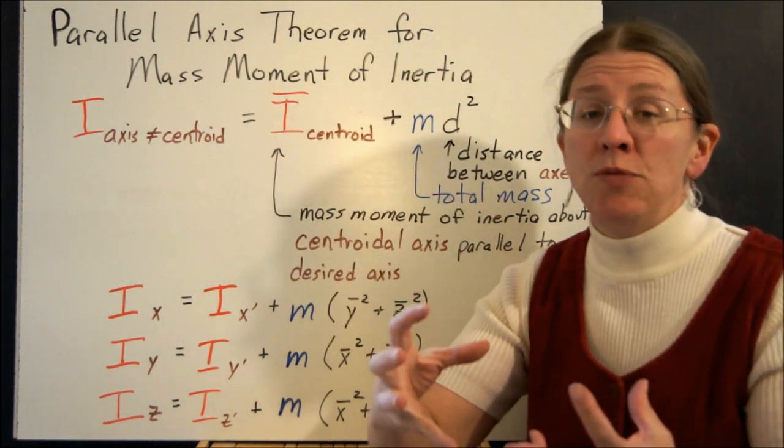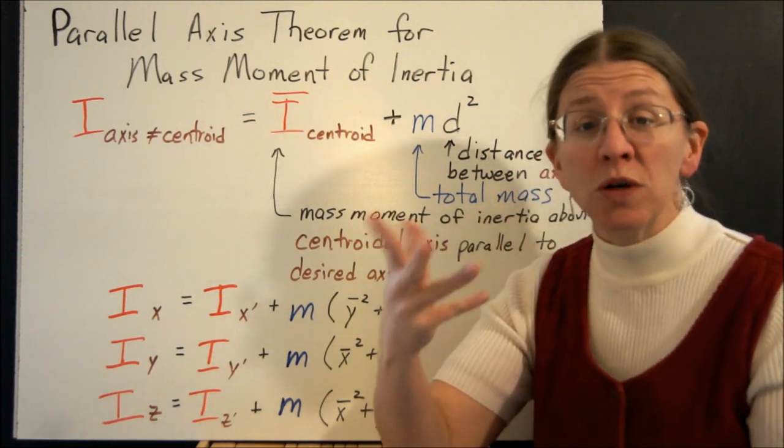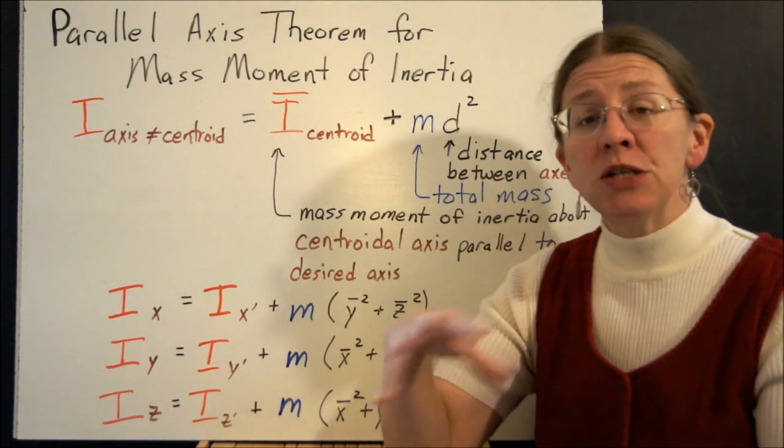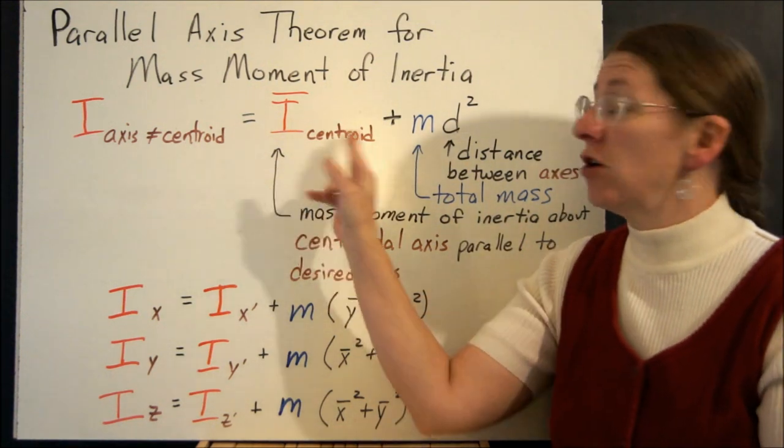When we're dealing with any object, it's unlikely that the centroid of that object is always going to lie on the only axis we're interested in. So what we want to be able to do is relate the moment of inertia about the centroid to the moment of inertia about any other axis.